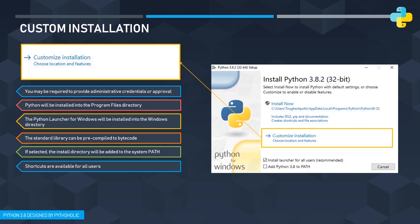The Python launcher for Windows will be installed into the Windows directory when using custom installation. Additionally, this option gives you the provision to install optional features you want, which can be selected during installation. You can also enable pre-compilation to generate .pyc files (bytecode) so it doesn't have to be done the first time you import them, improving execution time and performance. The install directory will be added to the system path, and shortcuts are visible to all users for whom you've installed Python.